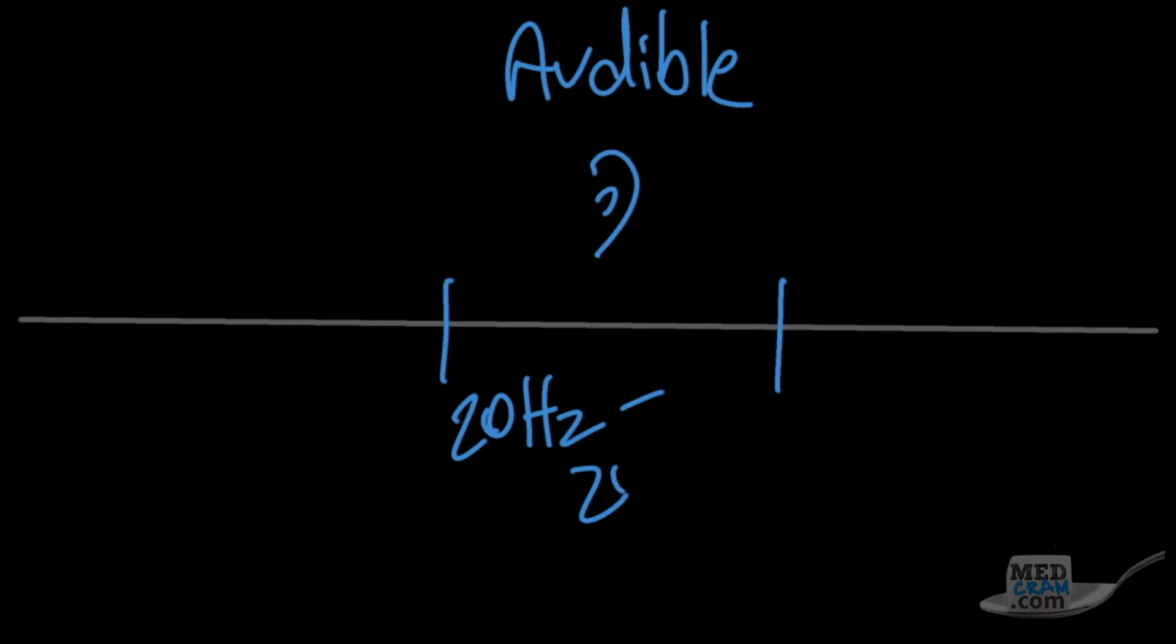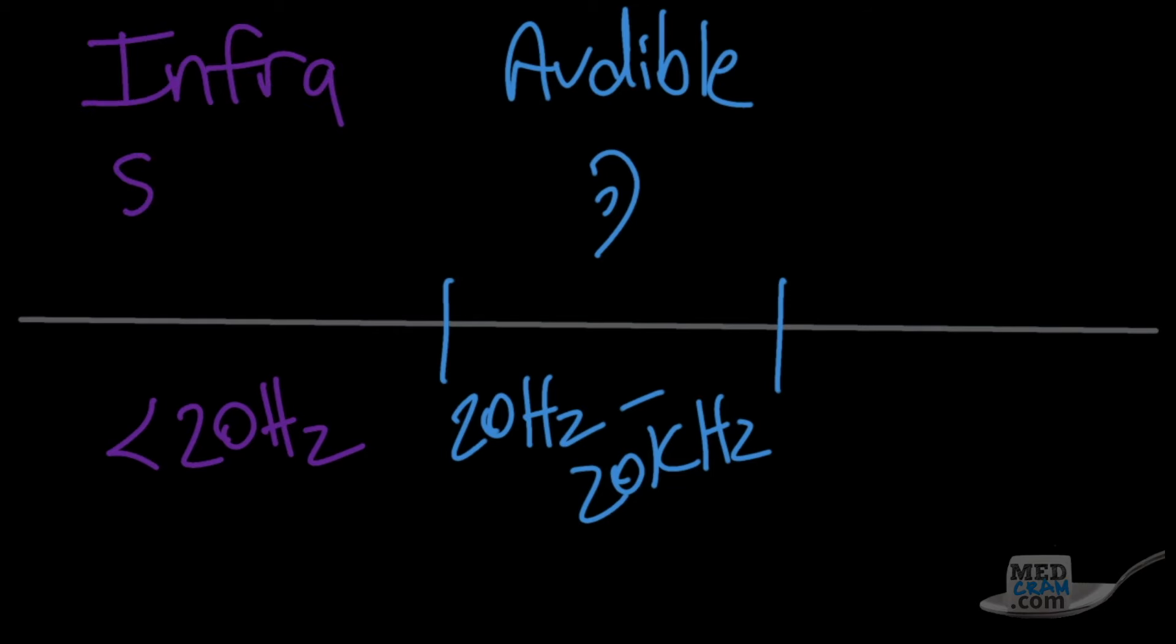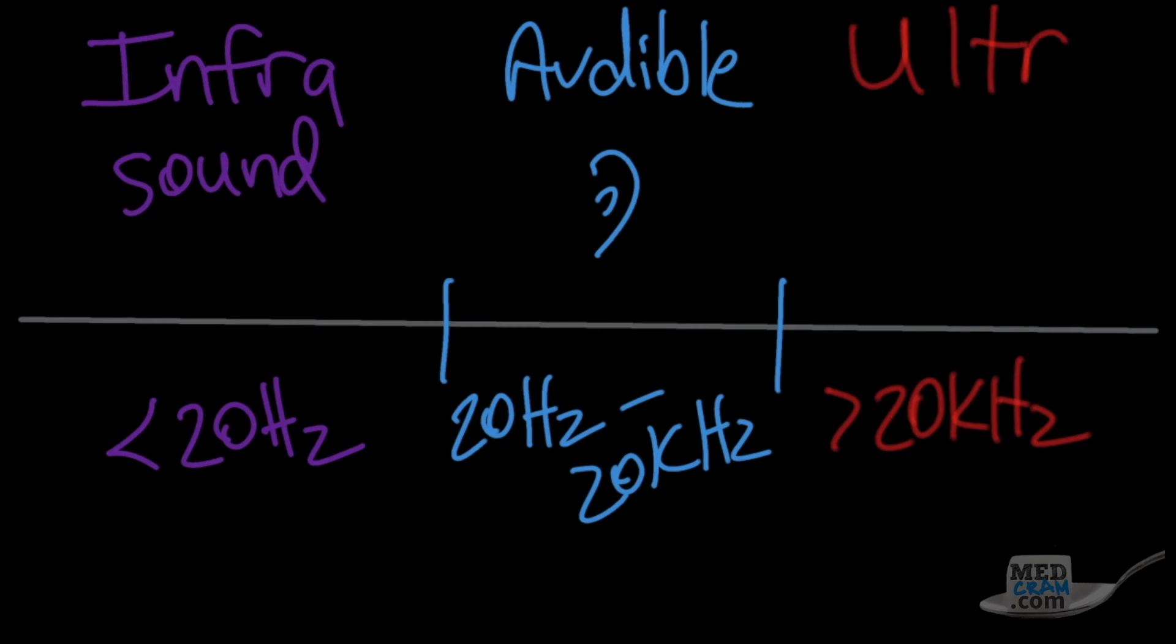Let's start off by defining ultrasound. If this line represents all of the possible audio frequencies that exist, then a portion of those frequencies are audible, or those that can be heard by the human ear, and this is said to be 20 Hz to 20,000 Hz. Everything below the hearing threshold is said to be infrasound, or subsonic. Then everything above the hearing threshold is said to be ultrasound. So ultrasound is simply sound waves that are above the hearing threshold.